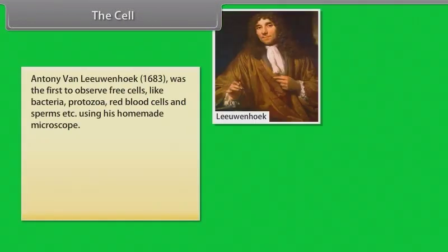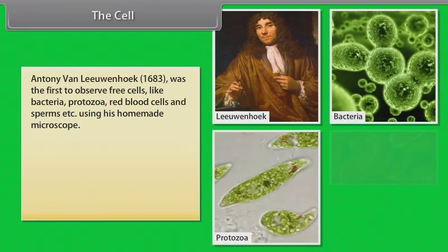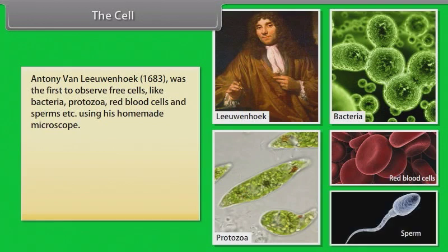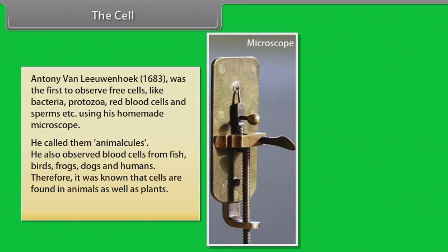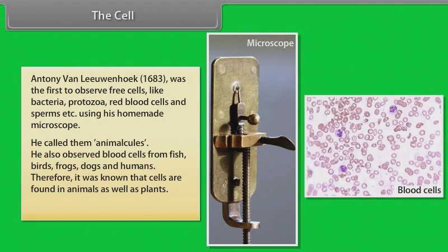Antony van Leeuwenhoek was the first to observe free cells like bacteria, protozoa, red blood cells and sperms, using his homemade microscope. He called them animalcules. He also observed blood cells from fish, birds, frogs, dogs and humans. Therefore, it was known that cells are found in animals as well as plants.